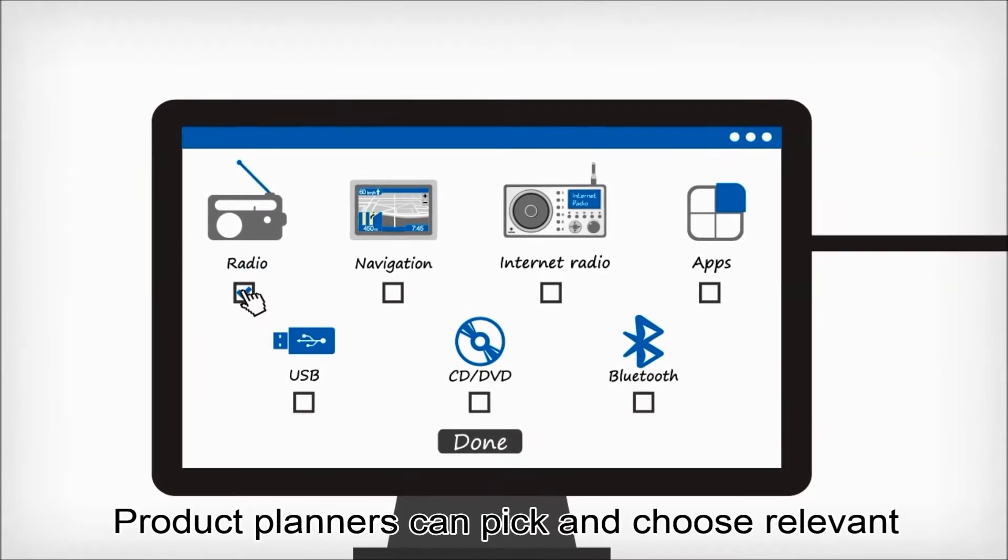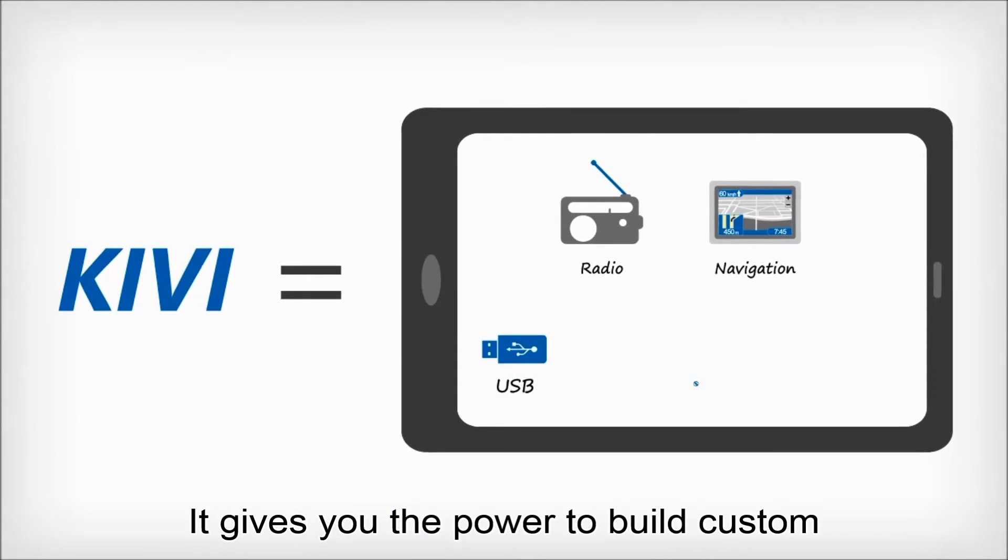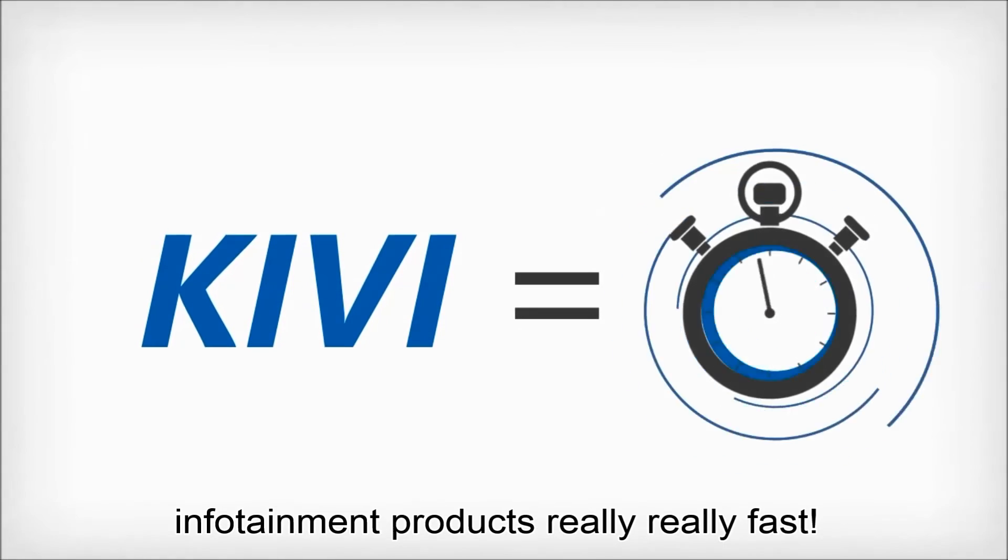Product planners can pick and choose relevant infotainment features that will generate a custom configuration for the engineering team. It gives you the power to build custom infotainment products really fast.